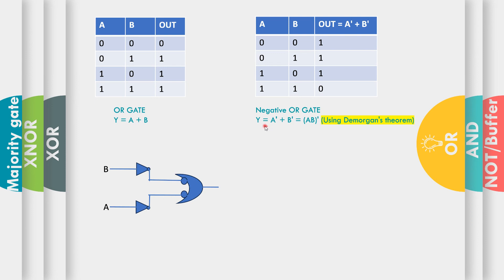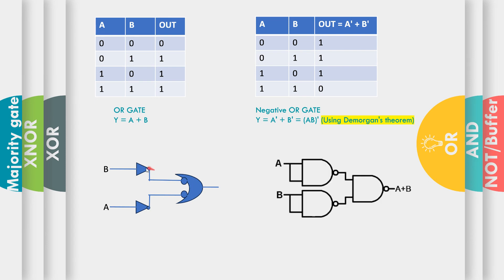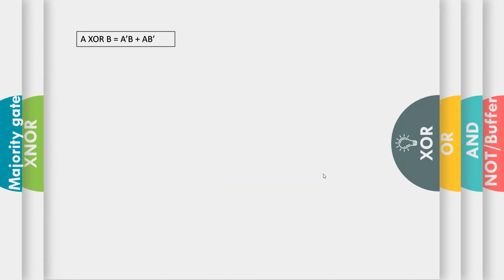This is also called De Morgan's theorem: our negative-OR gate that is Ā + B̄ is equivalent to the NAND gate, that is (A·B) bar. So we can replace this negative-OR gate with a NAND gate, and the inverters can also be replaced by NAND gates. This is how we have realized our OR gate using NAND gates.